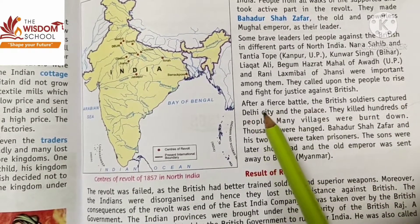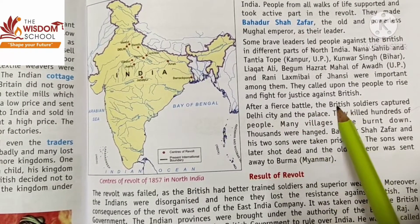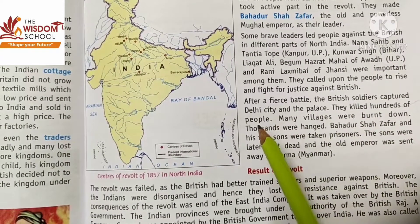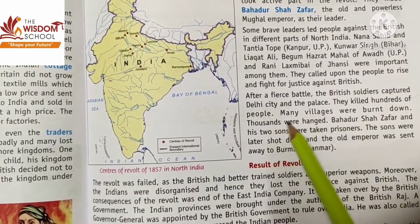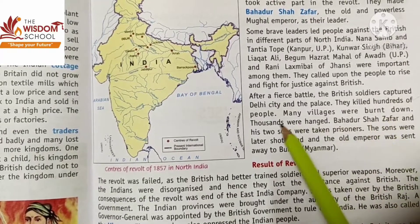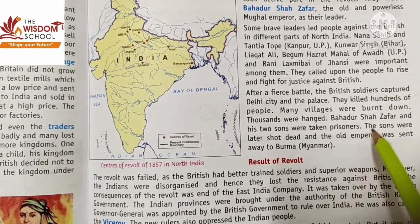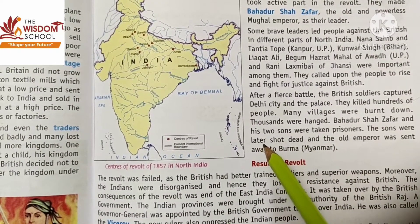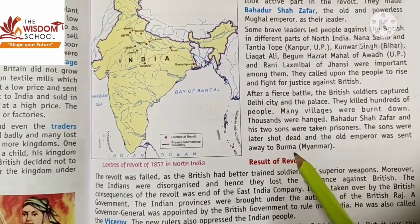After a fierce battle, the British soldiers captured Delhi city and the palaces. They killed hundreds of people. Bahadur Shah Zafar and his two sons were put in prison; the sons were later shot dead and the old emperor was sent away to Burma, which is now Myanmar.